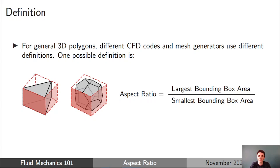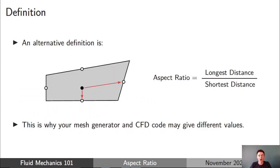One example definition is to draw a bounding box around the shape by taking the minimum and maximum x, y, and z coordinates of all faces and facets of the cell, and then defining the aspect ratio as the ratio of the largest area of the bounding box to the smallest area. Another way is to take the distance from the centroid of the cell to each face center, and then take the aspect ratio as the ratio of the longest to the shortest of those distances.